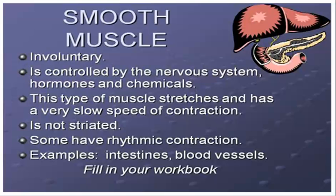Things are moving through that system not because you're telling it to, but involuntarily — your muscles are contracting and relaxing. It's pretty much controlled by the nervous system — your brain, all those nerves that run through your body, down your spinal column, your vertebral column. Hormones in your body and the chemicals basically make all these reactions happen, so it's going on without you consciously having to do it. It's very stretchy and has a very slow speed of contraction.